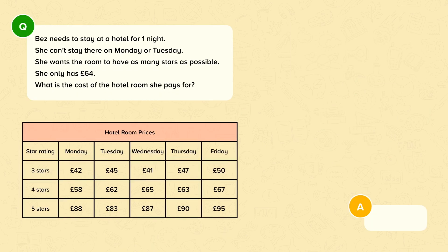Let's look at a question. Bez needs to stay at a hotel for one night. She can't stay there on Monday or Tuesday. She wants the room to have as many stars as possible. She only has £64. What is the cost of the hotel room she pays for?